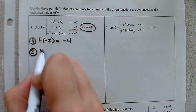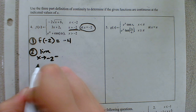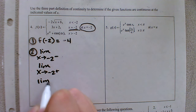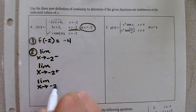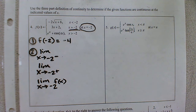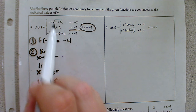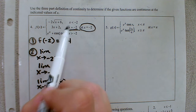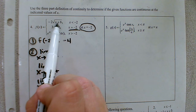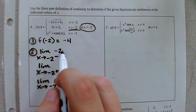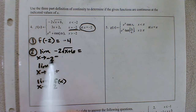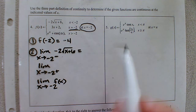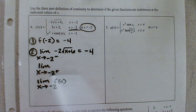Let's check the limit. We want to check as we approach negative two from the left and from the right to determine the overall limit at negative two. For a piecewise function, we pick the piece for x values smaller than negative two, which satisfies the first equation. Direct substitution gives us the square root of four, which is two, times negative two, giving us negative four.